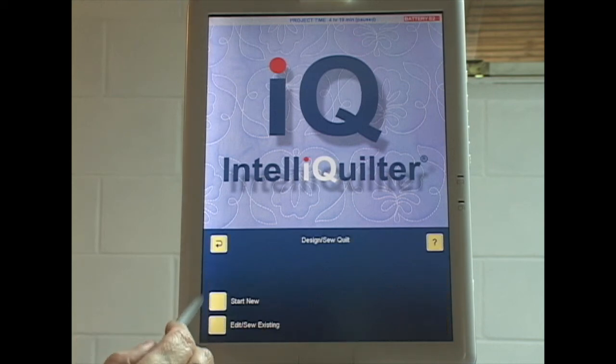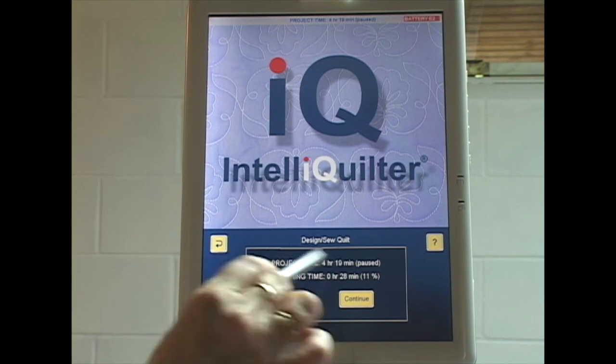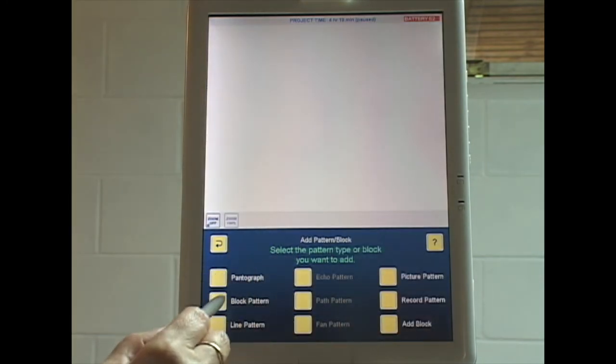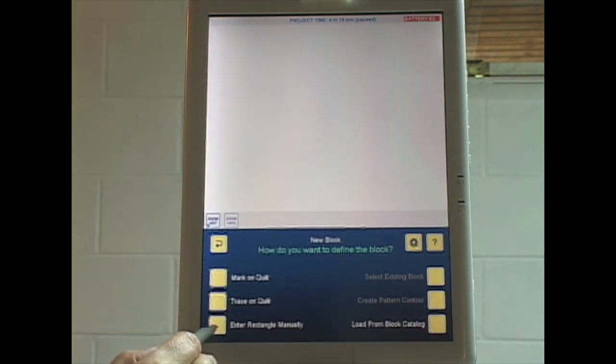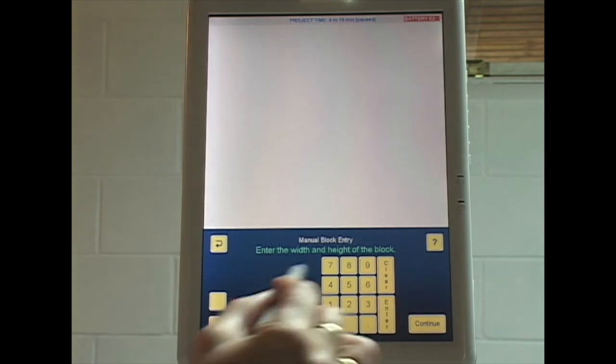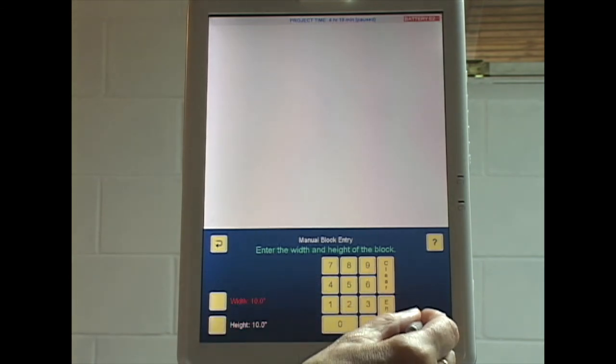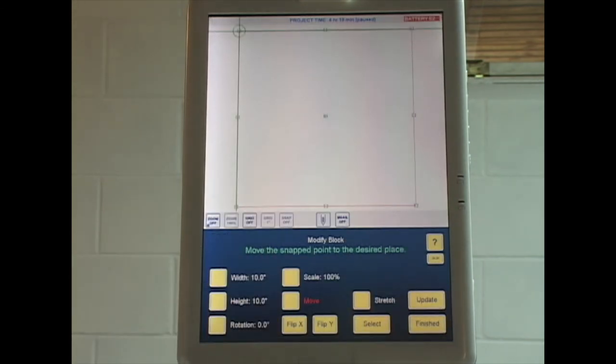So we're starting at the main menu: design, sew, quilt, start, new, continue, block pattern, enter rectangle manually, width 10, height 10, continue. It doesn't matter what size block, we're just doing some design work.